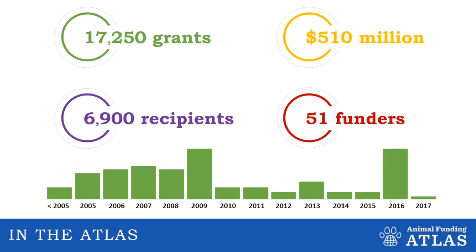In terms of the composition of the Atlas, we currently have just over 17,000 grants, and those have gone to just under 7,000 recipients, which works out to about 2.5 grants per recipient. The Atlas includes just over half a billion dollars in funding — 510 million — and that has been contributed by just 51 funders, averaging out to about $10 million per funder.